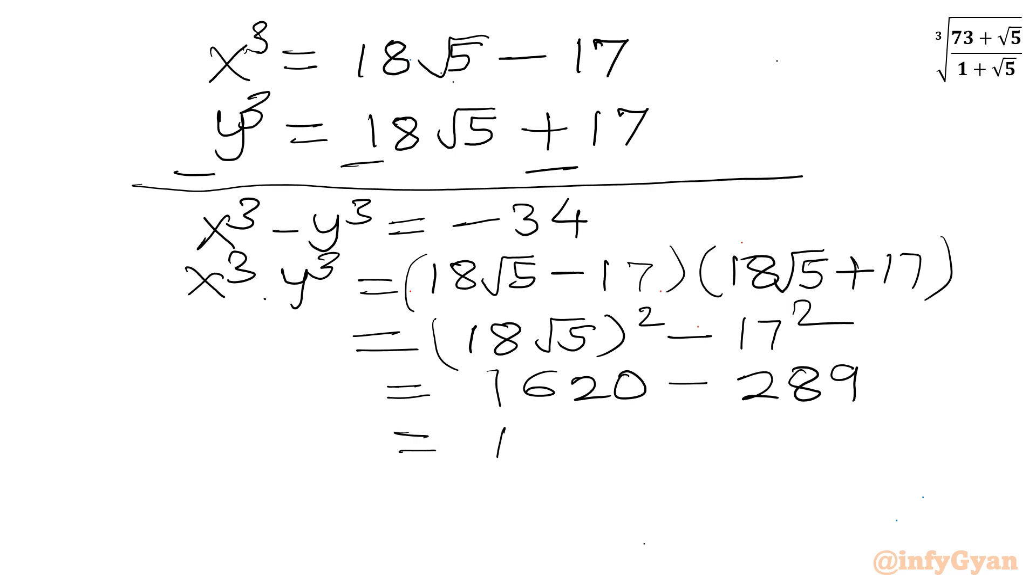A plus b times a minus b. So I can write 18 root 5 whole square minus 17 square. So this is 1620 and this value is 289, which will give us difference 1331, which is cube of 11. So I can write 11 cube. LHS is xy whole cube. Once I will consider cube root both sides, I can conclude xy equals 11.